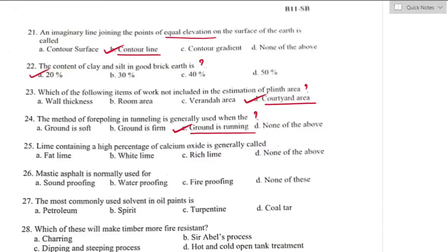Question number twenty-five: lime containing a high percentage of calcium oxide is generally called? When the calcium oxide content is 93–95%, it is generally called fat lime. Option A is the right answer. Fat lime contains a high amount of calcium oxide with less impurities.